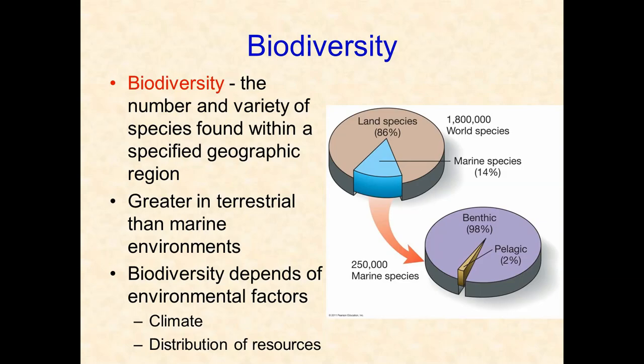Biodiversity depends on a lot of different factors. Climate is the most important one — the location of biomes is controlled by climate: temperature, precipitation, humidity, and cloud cover. But biodiversity also depends on what natural resources are available and what kinds of predators are present. All of these things affect biodiversity.